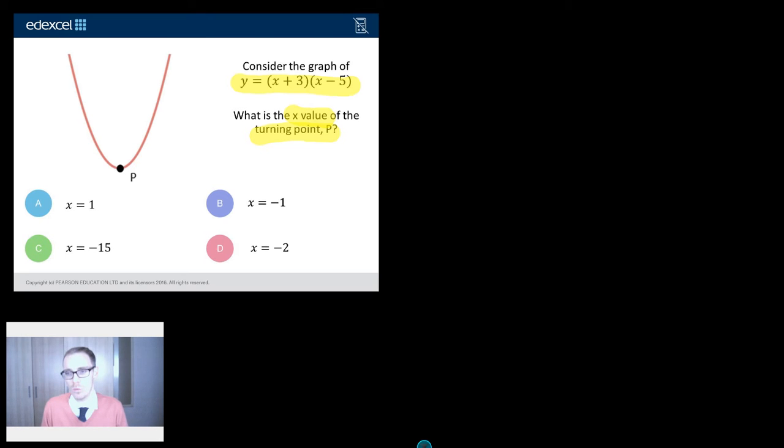Firstly you might be thinking what the flipping heck is the turning point? Well the turning point, it's got a couple of different names. Some people like to call it the minimum point or if the graph's the other way around it might be the maximum point. Another word for it if you go on to do A-level maths is the stationary point, and that's probably my favourite term for it. But turning point's fine, it's just where the graph turns.